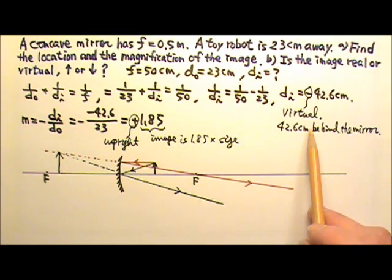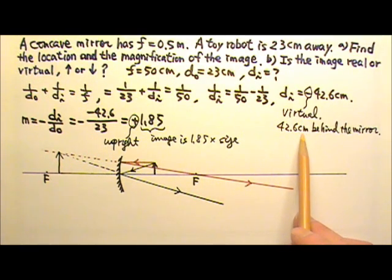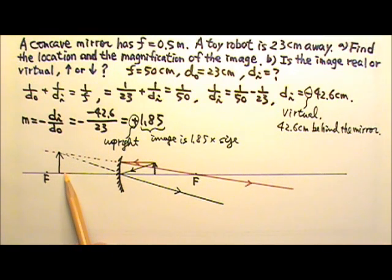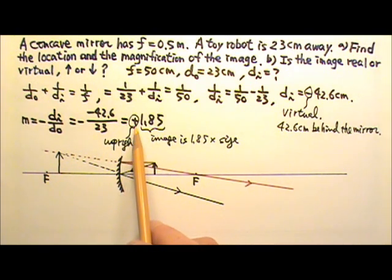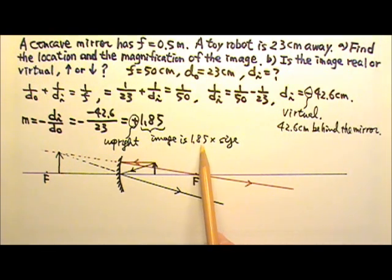So let's see. We have a virtual image because it is formed by the ray extension. It is 42.6 centimeters behind the mirror. So this is 42.6 centimeters and that's 50 centimeters. And the image is upright and it is about 1.85 times the size of the object.